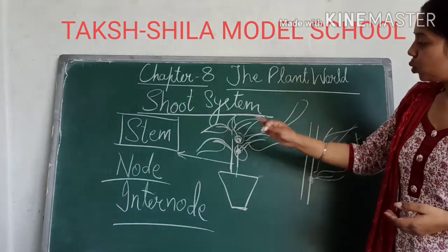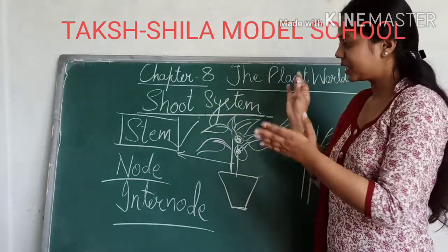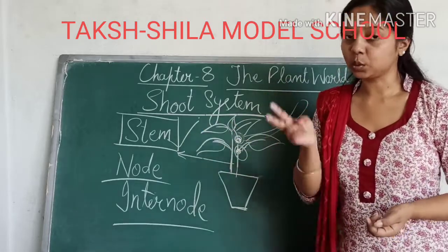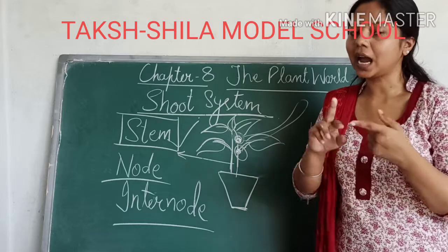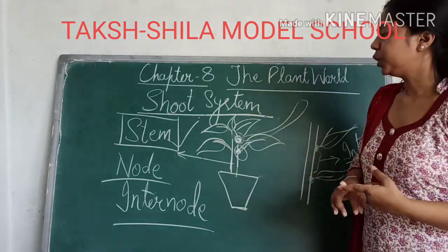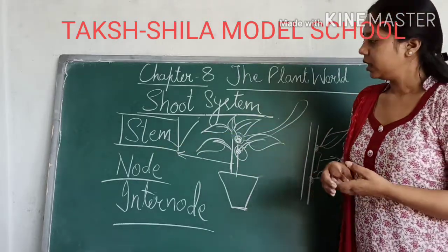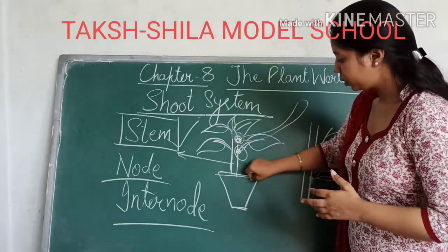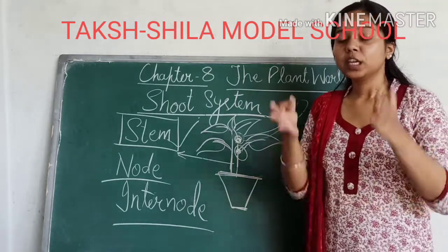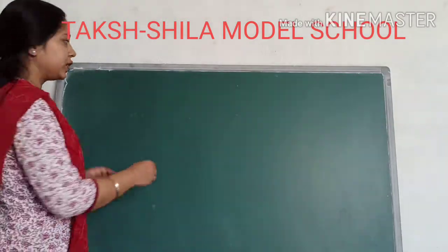So these are basically the two parts that the stem consists of — nodes and internodes. You can say that these two parts — nodes and internodes — are present inside the stem. Now I will tell you about the functions of the stem. The stem's location is above the land. Basically, the stem helps the plant to stand erect.